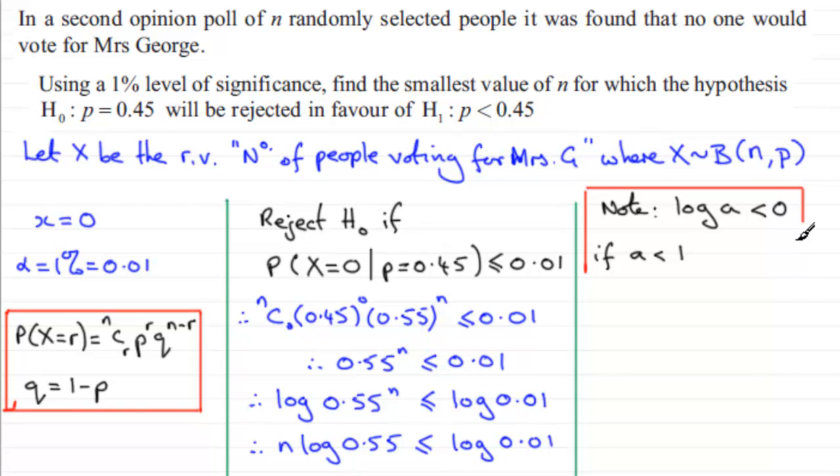Because when you divide by a negative number in an inequality, the inequality reverses. Therefore, N would be greater than or equal to the log of 0.01 over the log of 0.55. I'll just highlight that inequality in red to draw attention to it. It's been reversed. N is greater than or equal to the log of 0.01 divided by the log of 0.55.